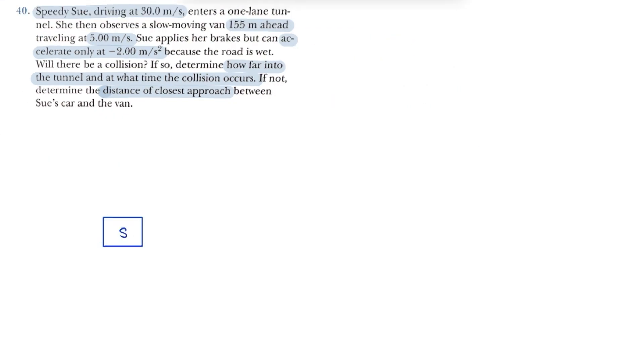For this problem, we'll start off by making a little diagram. So Speedy Sue is moving at 30 meters per second, and the van is moving at 5 meters per second in the same direction. As you can see, we made different lengths of velocity vectors to represent the speeds.